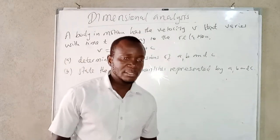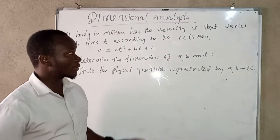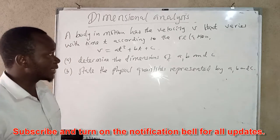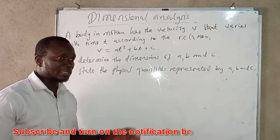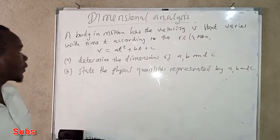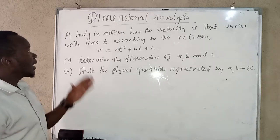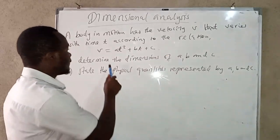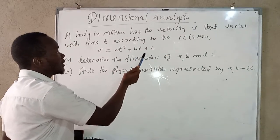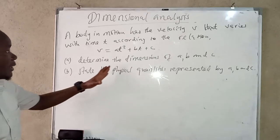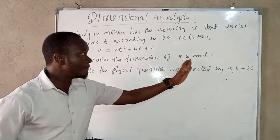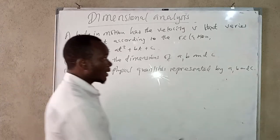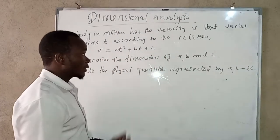In the last video on dimensional analysis, I talked about applications and some limitations, and I also solved some questions. In continuation, we are going to look at other questions. In this video, we're going to look at this question: a body in motion has velocity v that varies with time t according to the relation v = at² + bt + c. Part A: determine the dimensions of a, b, and c. Part B: state what a, b, and c represent.